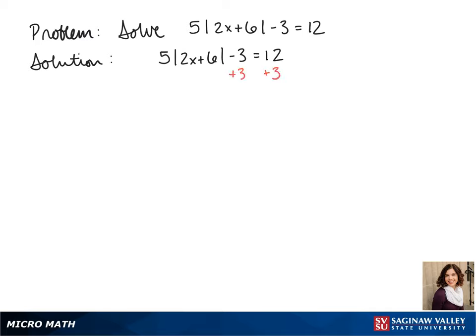Our first step is going to be to get the absolute value by itself, so we add 3 to both sides, and we get 5 times the absolute value of 2x plus 6 equals 15.